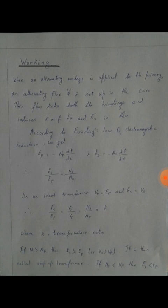Therefore, ES by EP equals NS by NP. For an ideal transformer, EP should be equal to VP. If this were not so, the primary current would be infinite, and ES equals VS since the primary has zero resistance.